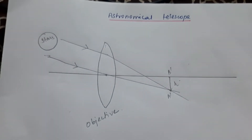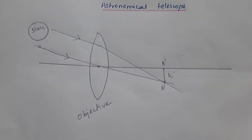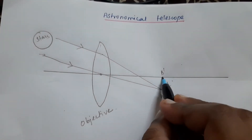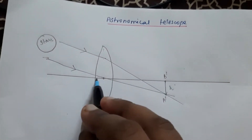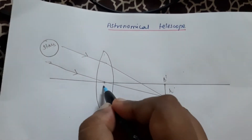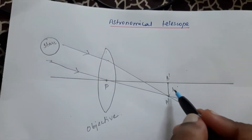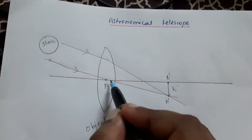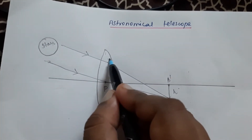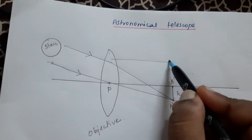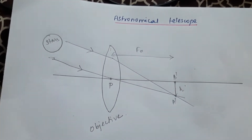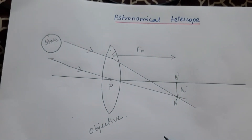The height of the image I take as H. This image is formed on the focal point of the objective. The optical centre and the focal point of the objective are marked, and the distance between them is the focal length of the objective, F_O.